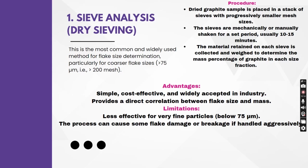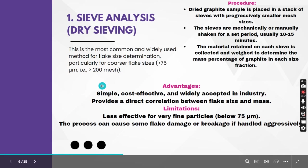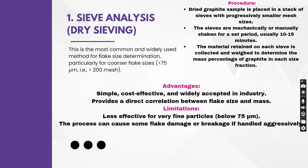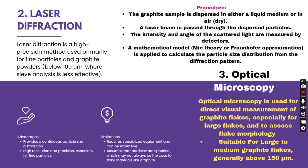This is very important and advantageous because it is a simple, cost-effective, and widely accepted technique in industry, providing a direct correlation between flake size and mass. It is less effective for very fine particles less than 75 microns; however, our main target is more than 75 micron range anyway, as very fine graphite already has much lower value.